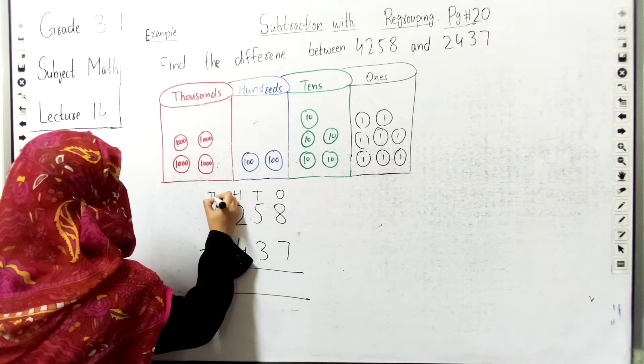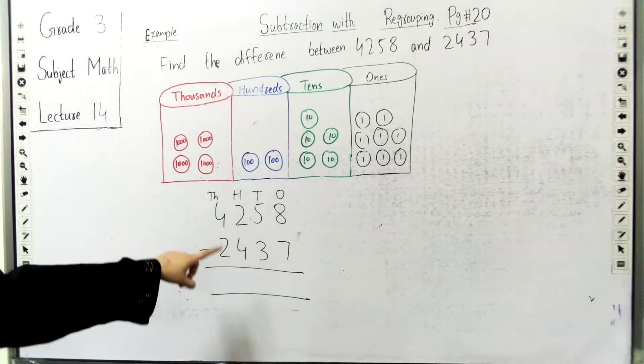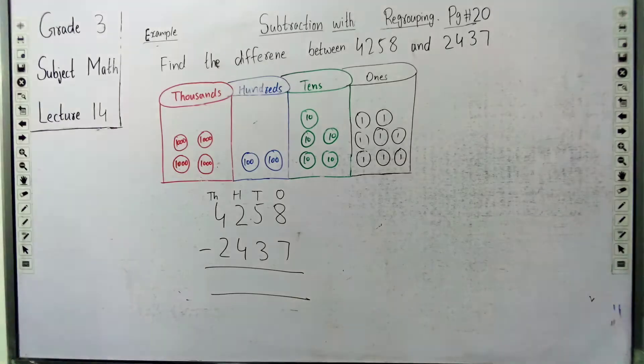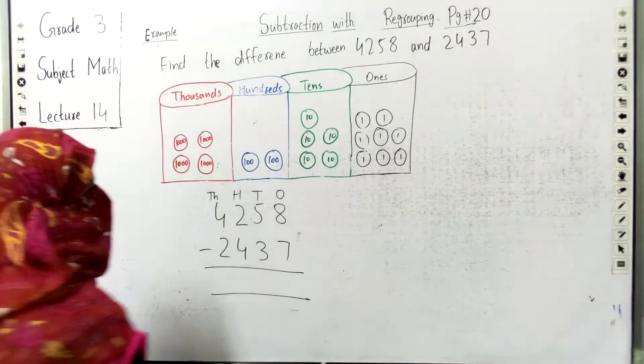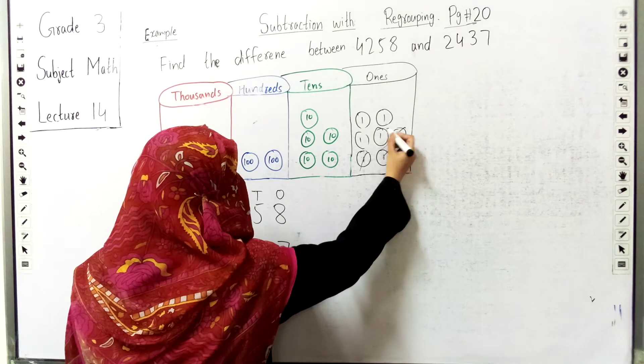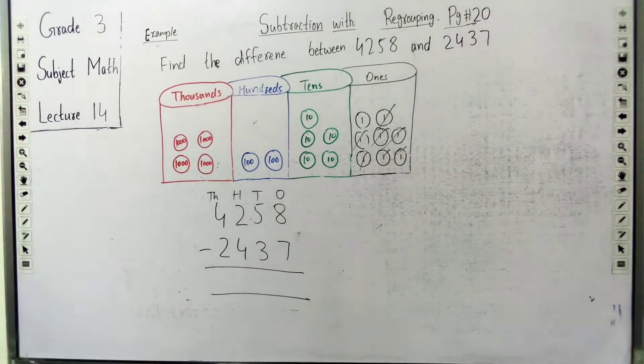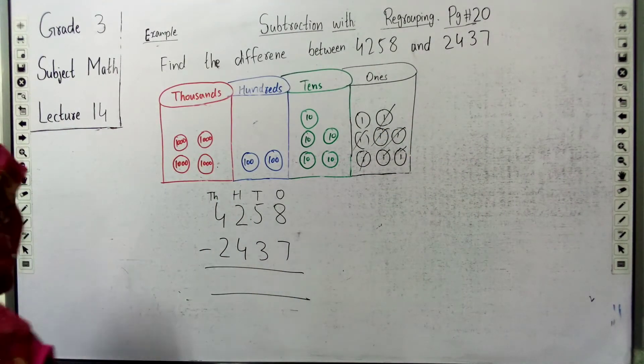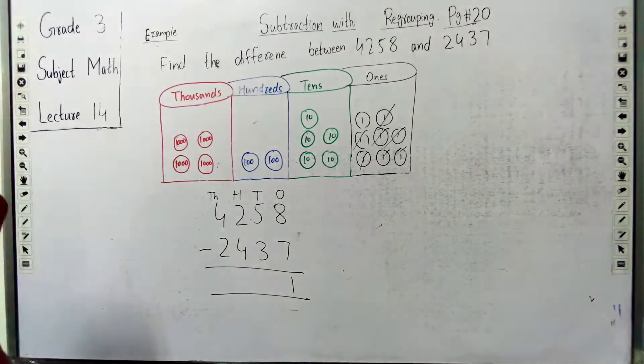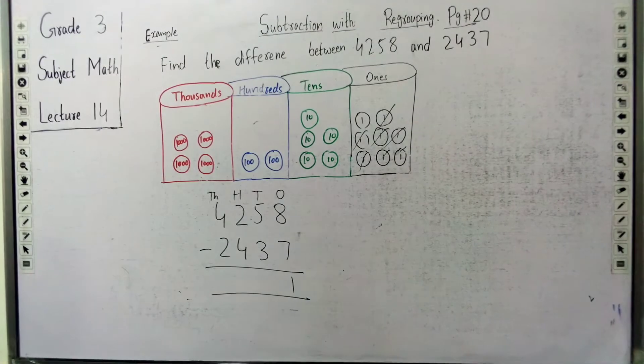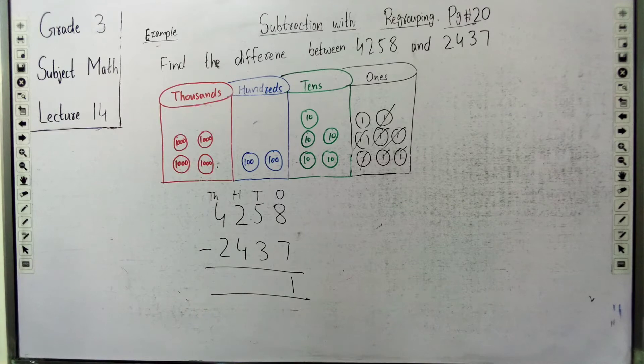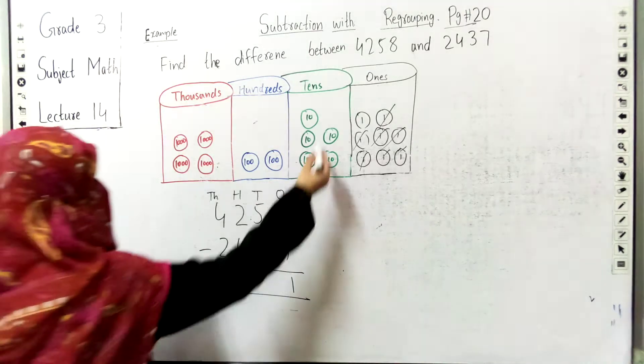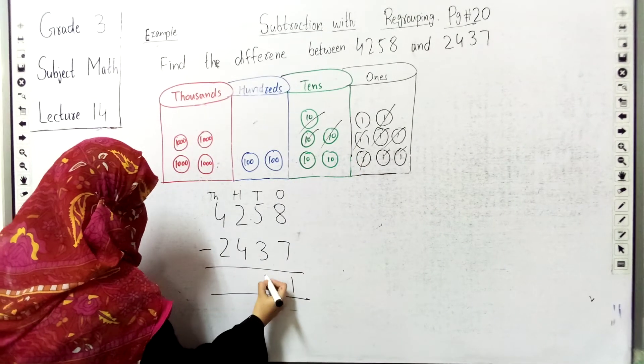Here we have the ones and the tens and the hundreds and the thousands. So 8 blocks of 1, we have 7 blocks of 1 to minus. So 8 minus 7, we have 1. Next we have 5 blocks of 10. We have 3 blocks of 10 to minus. So 5 minus 3, we have 2.